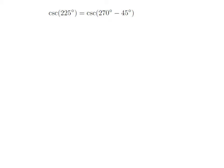As 225 degrees is equal to 270 degrees minus 45 degrees, so cosecant of 225 degrees is equal to cosecant of 270 degrees minus 45 degrees.